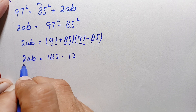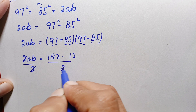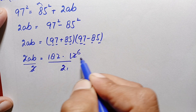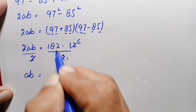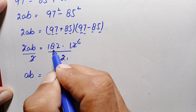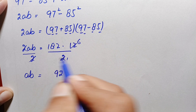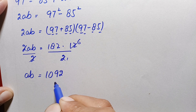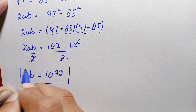Dividing both sides by 2: ab = (182 × 12) / 2 = 182 × 6. Calculating: 6 × 2 = 12, carry 1; 6 × 8 = 48, plus 1 = 49; 6 × 1 = 6, plus 4 = 10. So ab = 1092.